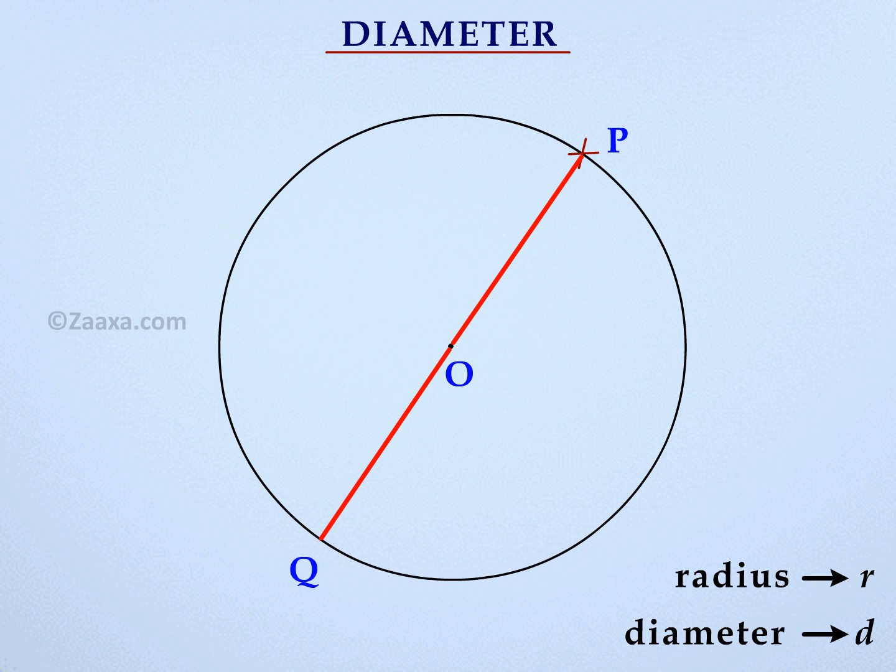Do you notice that the diameter is made up of two radii? Hence, diameter of a circle is equal to twice its radius. Hence, we write D is equal to 2R.